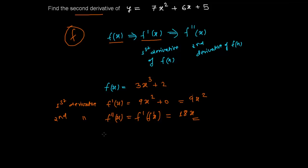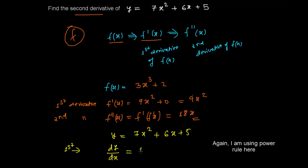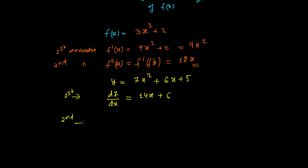Let's do an equation. Our given function is y = 7x² + 6x + 5. You need to find out the second derivative. Before that, find out the first derivative, which is dy/dx. It is 14x + 6 — this is your first derivative. Now for the second derivative, d²y/dx², it is the derivative of 14x + 6, which is simply 14.